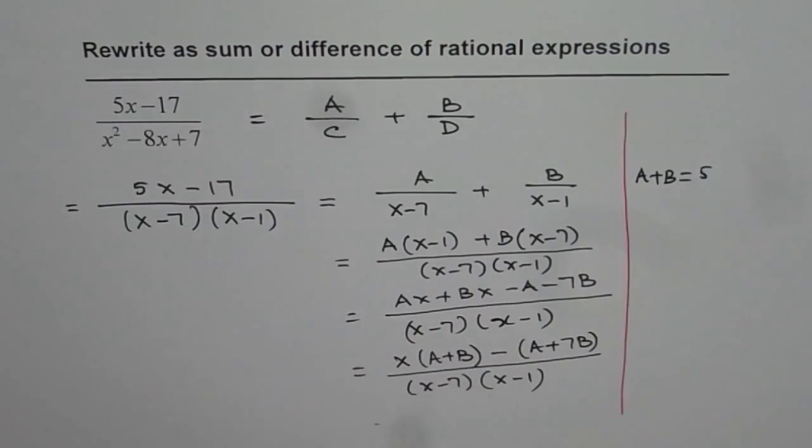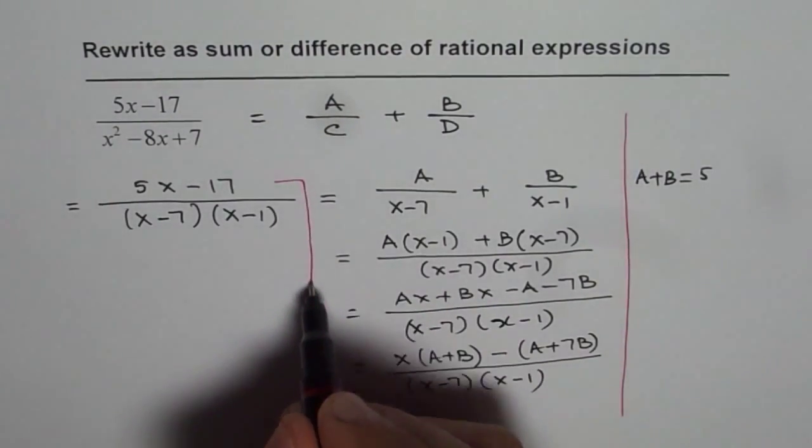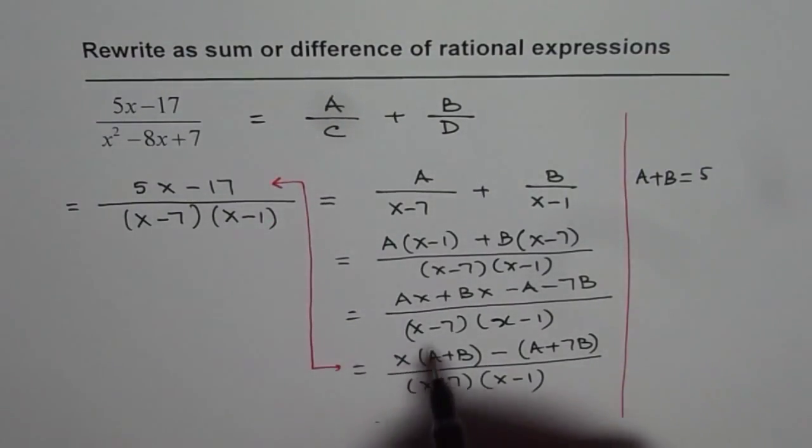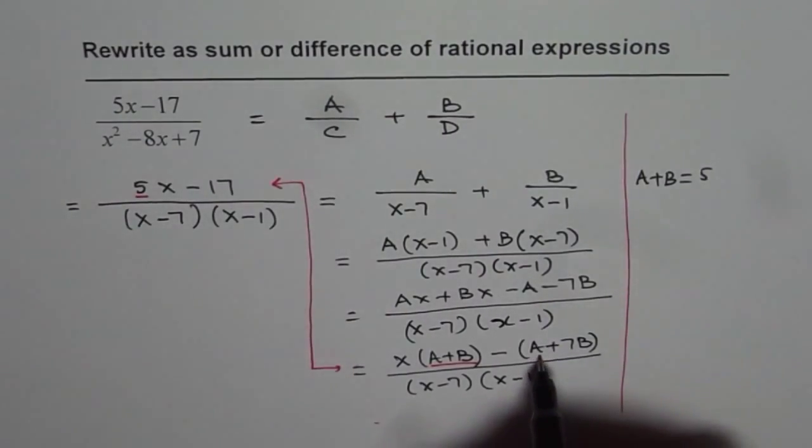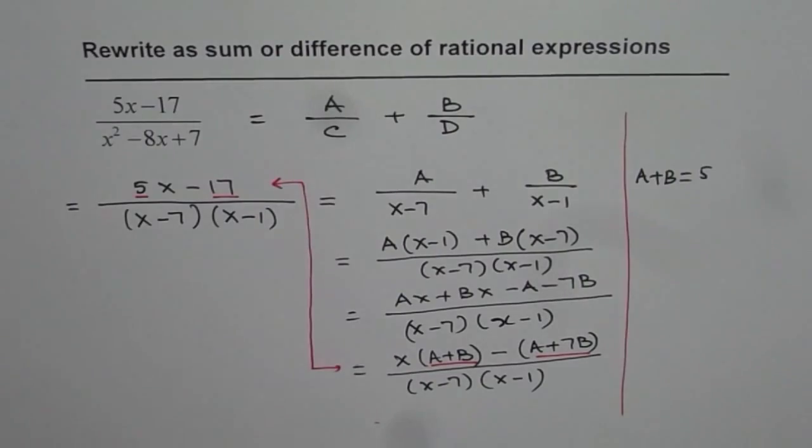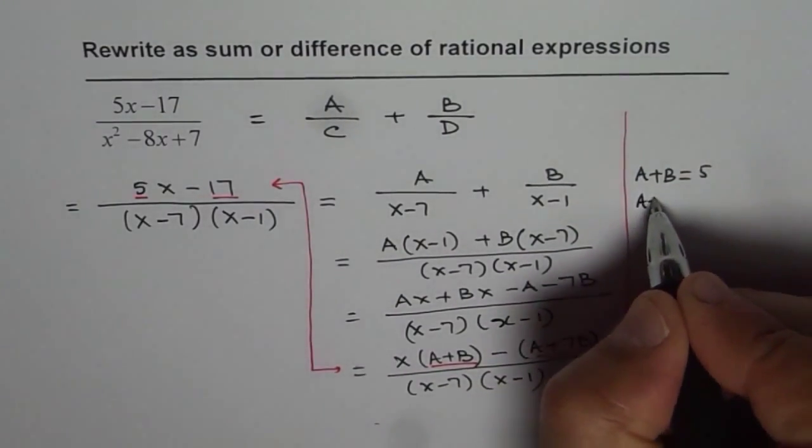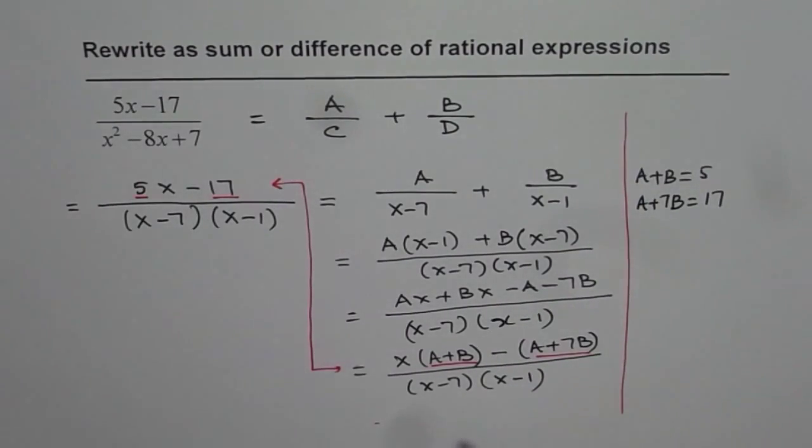Comparing the two equations, what we are trying to do is we are trying to connect these two. So a plus b should be equal to 5 and a plus 7b should be equal to 17. Then we get minus sign here. Okay, let us solve.